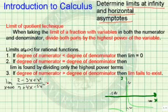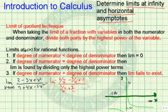We would then have the limit of 2 over x squared minus 3 over x plus 1 divided by 7 over x squared plus 4 over x minus 5. We're taking the limit as x approaches infinity.